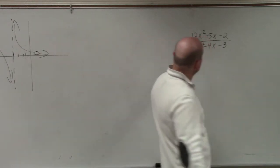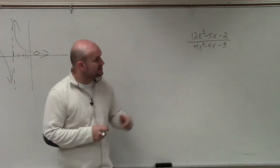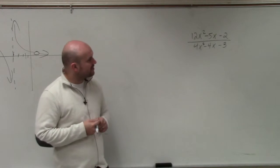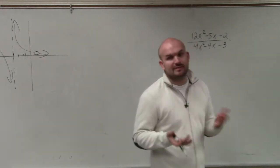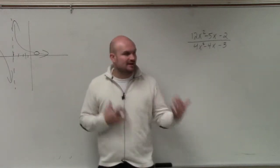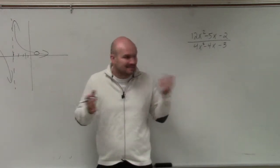So on the last example, ladies and gentlemen, what I have here is 12x squared minus 5x minus 2 divided by 4x squared minus 4x minus 3. Now, the first thing we want to do is determine and see if we can simplify it, factor out any terms. But unfortunately, we cannot in this example.